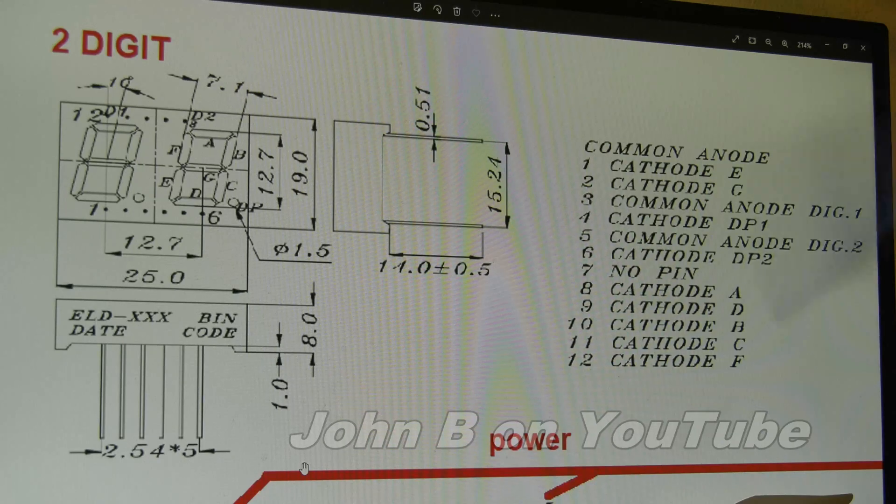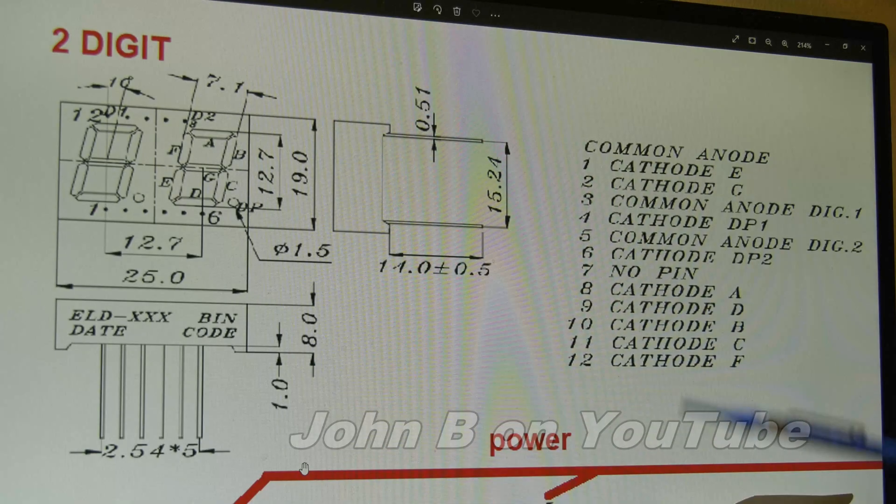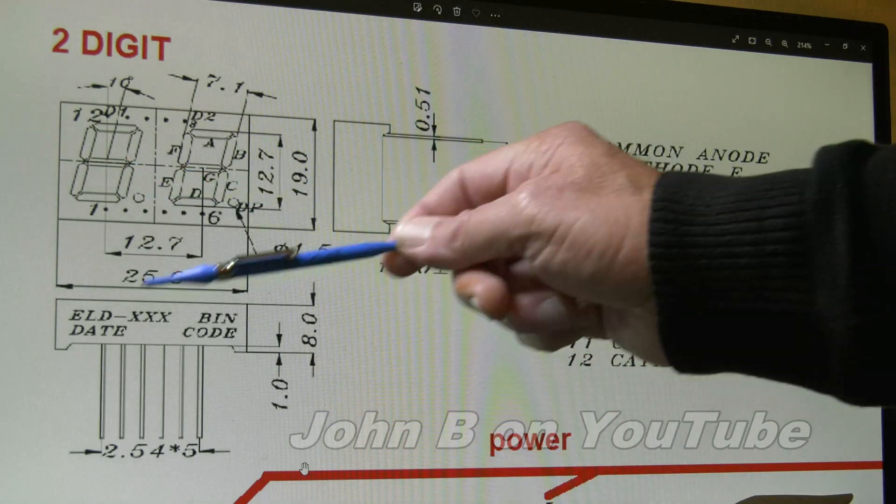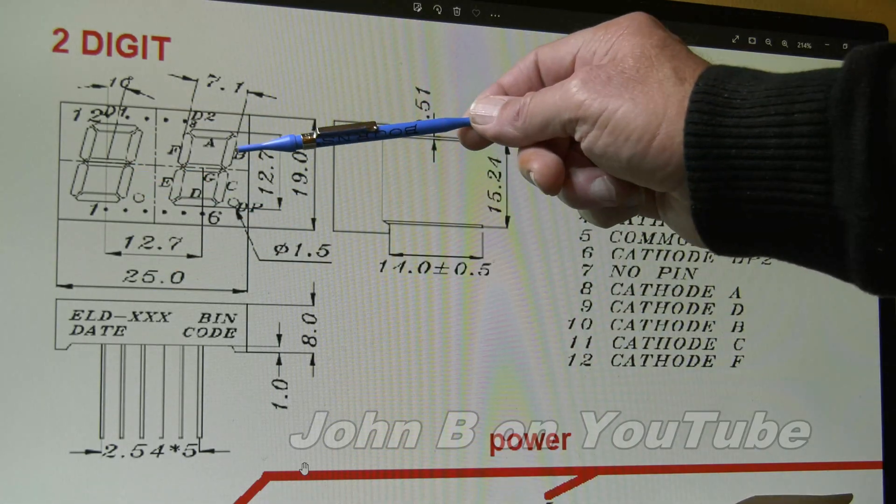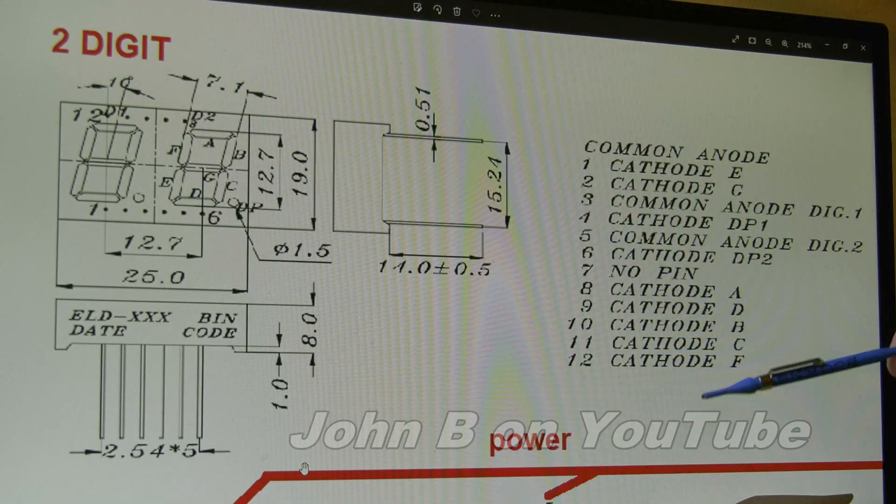If I show you the digits I'm using, they're made by Everlight. There's the segment details. But look here, we've got two digits, so that should be 14 segments, two A's, two B's, two C's, but they're generally not wired like that. Have a look at the text over here.